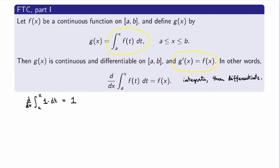Is that true? In this case we can check explicitly, because we know how to integrate 1. We've seen that this integral is just x minus a, so if I take the derivative with respect to x on both sides, I get 1 on the right-hand side. So I recover the statement of the fundamental theorem of calculus. But this is not always so useful — it happens often that functions are defined as integrals and you don't know how to integrate them explicitly, so you have to use the FTC directly.